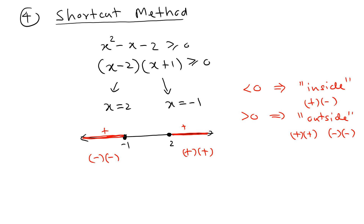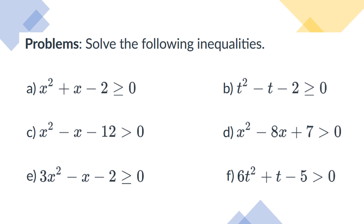Those are the four methods. Now try the practice problems shown — there are different types, so make sure you pay attention to the equal sign and strict inequality. Use your favorite method and let me know in the comments which one it is and why. If you have trouble factoring, check out the video on the crisscross method — it explains a quick way to find factors.